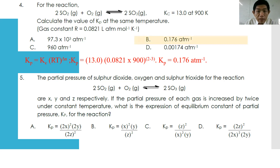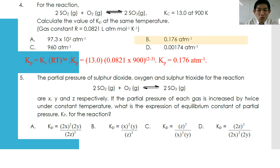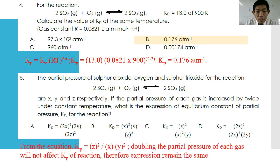Question number five: partial pressures of sulfur dioxide, oxygen, and sulfur trioxide for the reaction are X, Y, and Z. If the pressure of each gas is increased by twice under constant temperature, what is the expression of the equilibrium constant? This is tricky because, as previously mentioned, changes in pressure will not change Kp of the system. Therefore Kp remains the same, which is Z² divided by (X² × Y). That is the expression of Kp.